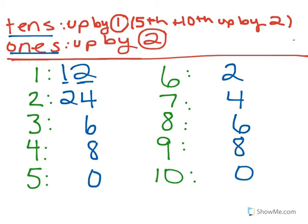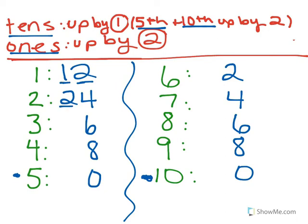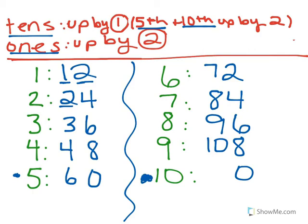The ones are super easy. Now for the pesky rule-breakers in the tens place — the 5th and 10th multiples go up by two, everything else goes up by one. So starting with 1 for 12, tens go: 1, 2, 3, 4 — then rule-breaker at the 5th: 4 plus 2 is 6. Back to normal: 6 plus 1 is 7, 7 plus 1 is 8, 8 plus 1 is 9, 9 plus 1 is 10 — and last rule-breaker: 10 plus 2 is 12. So the ten multiples are: 12, 24, 36, 48, 60, 72, 84, 96, 108, 120.